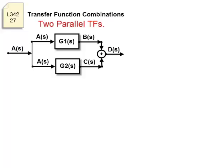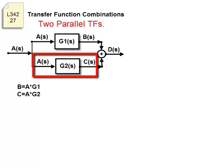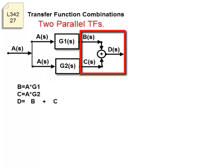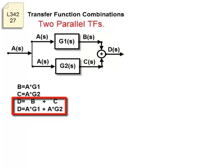Two parallel transfer functions. Can they be combined into one transfer function? B is A times G1. C is A times G2. That's a summing junction. D is equal to B plus C. Eliminate B and C.